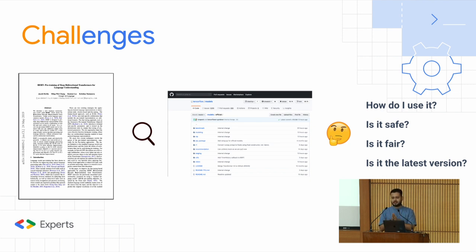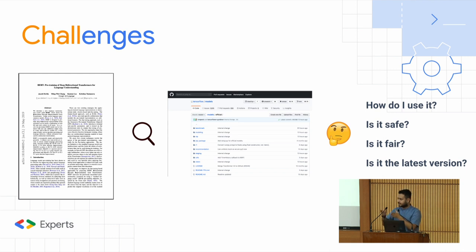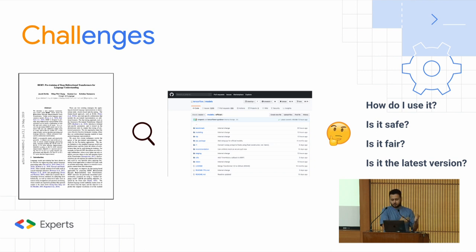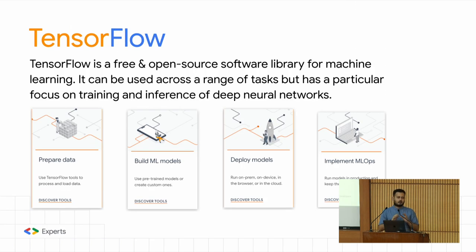One of the challenges every data scientist faces today is having a problem in hand and wanting to create an end-to-end solution. There are a lot of open source implementations available on GitHub and other places, but the question remains: how can one use that open source code efficiently? Is it safe to use? A lot of GitHub repositories may have the actual implementation but not a proper readme file. Has the model been fairly trained, and is it the latest version? These are the different challenges individuals face while creating end-to-end ML applications, which is where a GitHub equivalent for machine learning comes in — TensorFlow Hub.